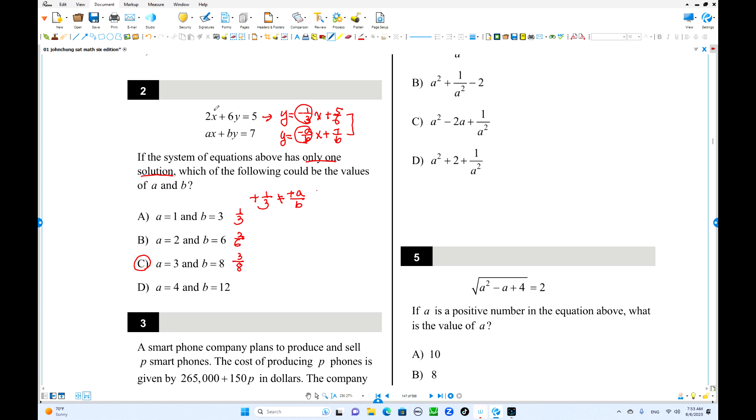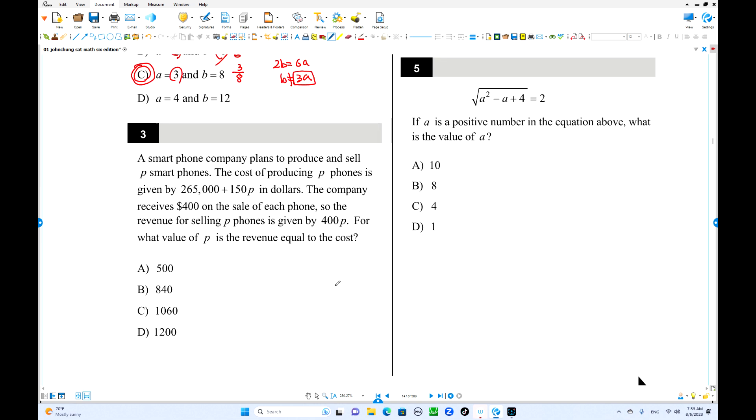Or you can use the formula over here. 2 over a is not equal to 6 over b means they have different slope. When you cross out, 2b equals 6a, b equals what? 3 times a. So if the number b is 3 times a, they are parallel. Not parallel, they have one intersection. So this one has different slope.